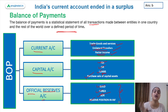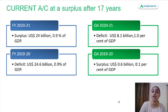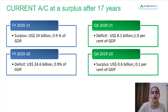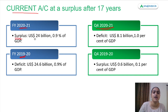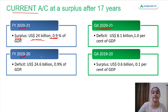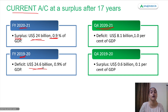So these are the three main components of our balance of payments account. Regarding the current account — because we have seen a surplus after 17 years, it is worth noting. The financial year 2020-21 ended in a surplus of around 24 billion US dollars, which is 0.9% of GDP. The previous year saw a deficit of around $24.6 billion, also 0.9% of GDP.